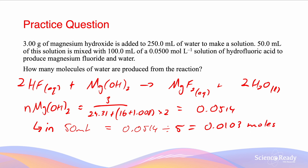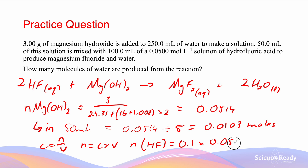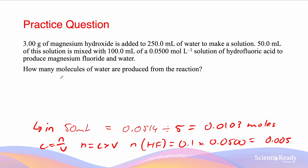The number of moles of hydrofluoric acid is calculated differently. We are given a volume of 100 millilitres or 0.1 litres and a concentration of 0.500 moles per litre. Since C equals N over V, N equals C times V, so the number of moles of HF equals 0.1 times 0.500, which equals 0.005 moles. Since the ratio of HF to Mg(OH)₂ is 2 to 1, we can have a maximum of 0.005 divided by 2 moles of Mg(OH)₂ in use, so our limiting reagent must be HF.